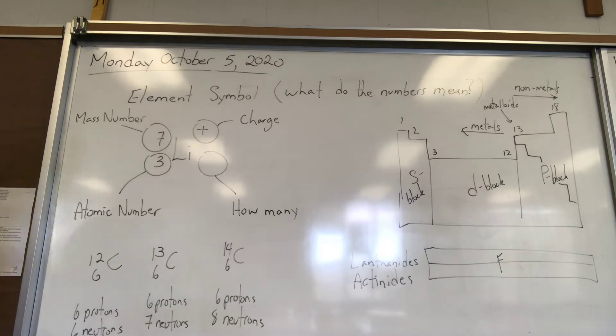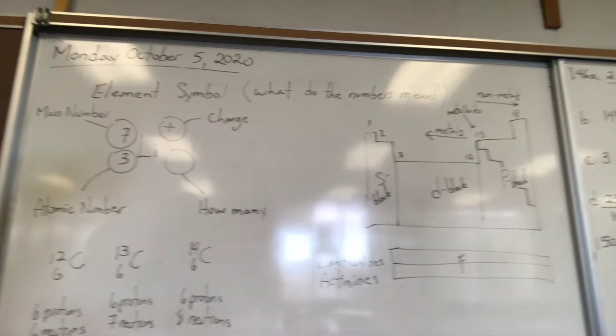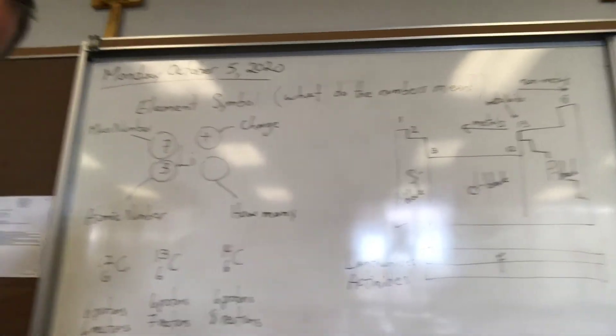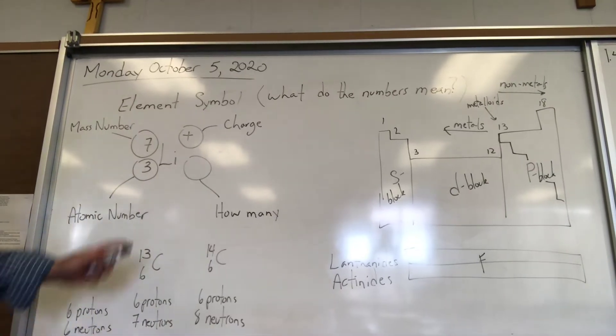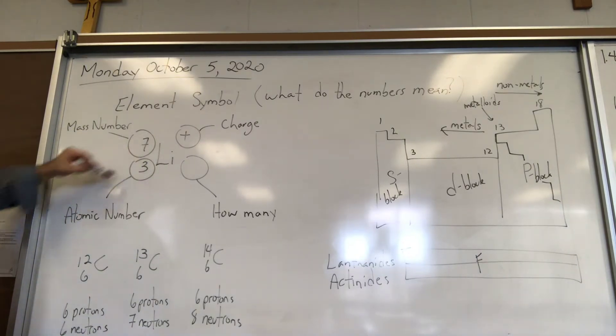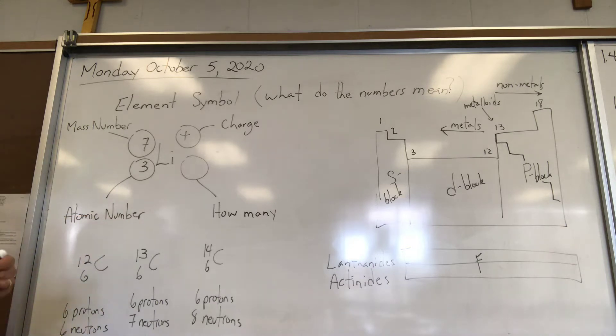First of all, you need to know the element symbol and what it means. The element symbol has a number in this position on the bottom left—that's called the atomic number—and it tells you how many protons.